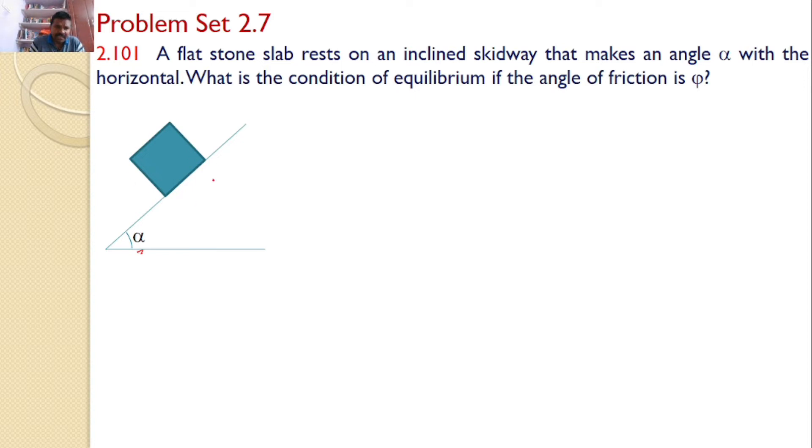Let us consider the free body diagram of the stone slab. The various forces acting on the stone slab are: the first one is the self-weight W, and the next one is the reaction force by the plane onto the stone. Let N be the reaction force.